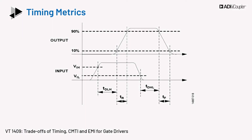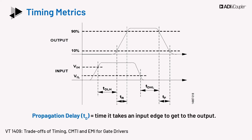The first metrics we will discuss are the timing metrics. These include propagation delay, skew, and pulse width distortion. These metrics affect the system response and control. Propagation delay, TD, is the most basic timing parameter and it is stated as the time it takes an input edge to get to the output.